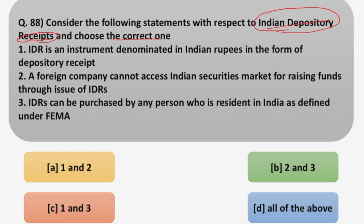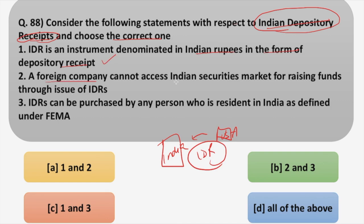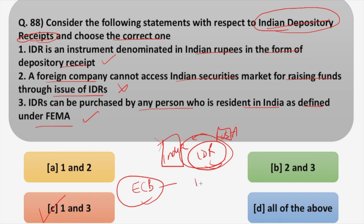Basically, a foreign firm raises funds from the Indian security markets by issuing Indian Depository Receipts. Now reading the statements: Statement 1 — IDR is an instrument denominated in Indian rupees in the form of a depository receipt — this is true. Statement 2 — a foreign company cannot access Indian securities market through IDR — this is not correct. Statement 3 — IDRs can be purchased by any person resident in India as defined under FEMA — this is also true. The correct answer is option C: statements 1 and 3. Homework: search and tell me what external commercial borrowings are and how they differ from IDR.